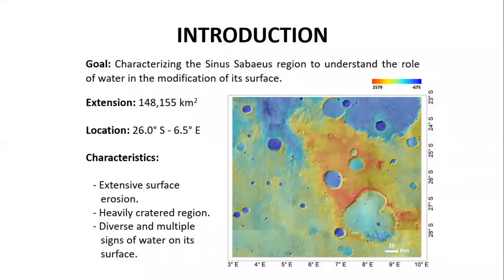The topography is defined by two large valleys flowing from south to north. Between those valleys, there is a saddle, and there are two large eroded impact craters bound to the northeast and southeast.